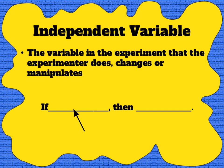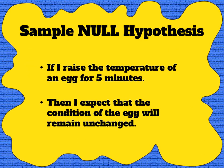First is the independent variable (IV). This is the element that the experimenter is going to manipulate and is the whole point of the experiment. It's found in the 'if' statement of the hypothesis, explaining what the scientist will do. A controlled experiment has only one independent variable. In this hypothesis I can see that the experimenter is planning to raise the temperature, which means temperature is the independent variable in this particular experiment.